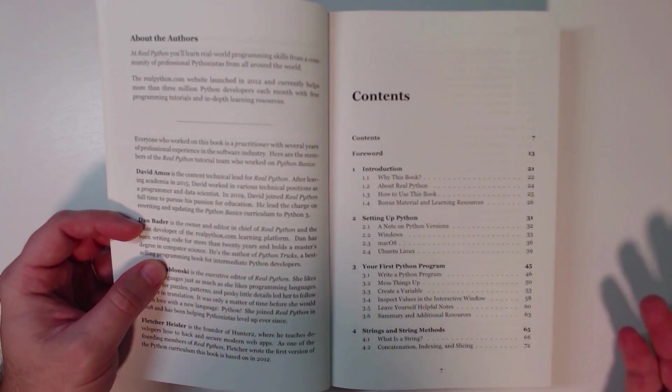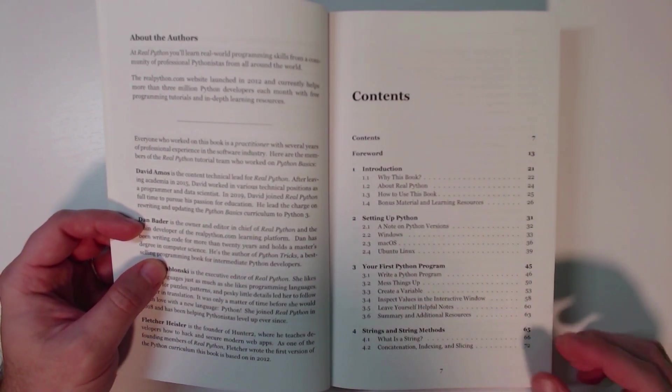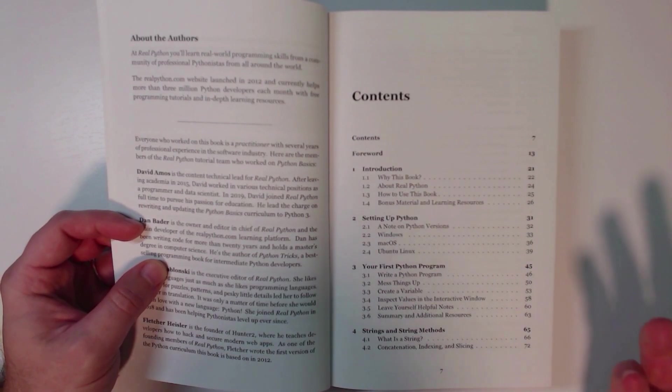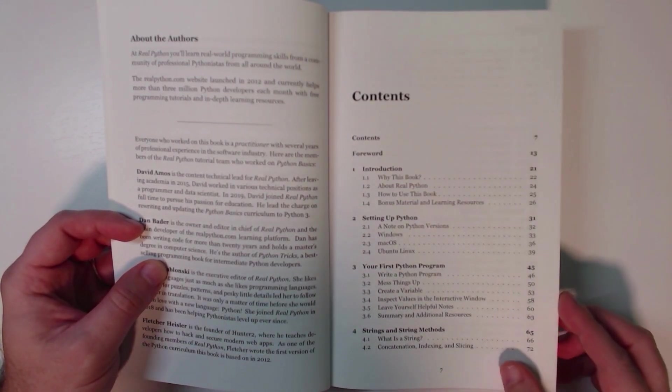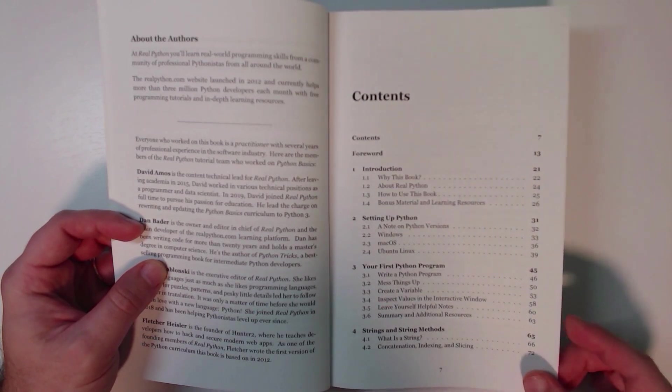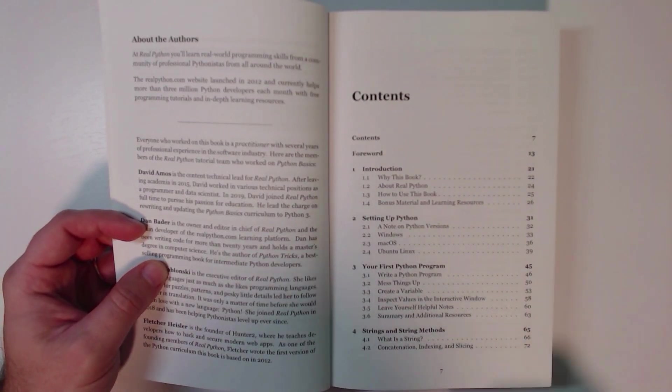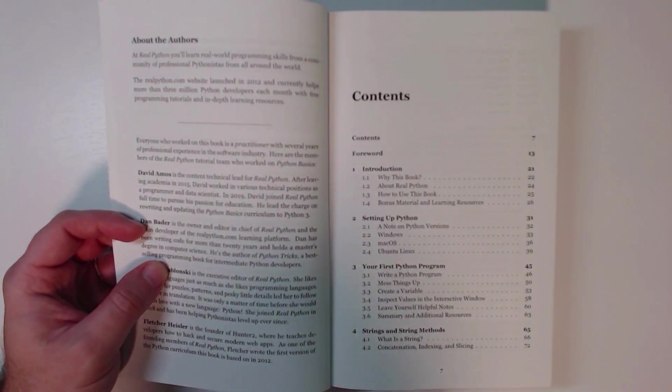So the book starts with a chapter on how to get Python set up and we cover three different operating systems, Windows, macOS, and Ubuntu Linux. And then we get straight away into writing your first Python program and also encountering your first error and seeing some of the things that can go wrong because inevitably things will go wrong when you program.